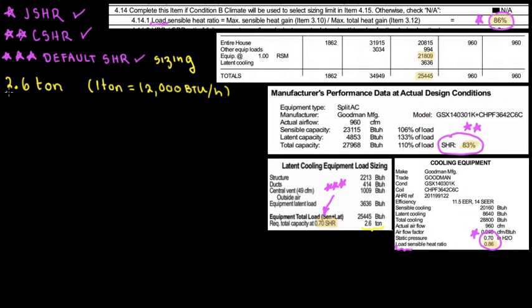This 2.6 ton came about because of the 0.7 sensible heat ratio that we manually put, or if we don't put any sensible heat ratio, the program will put it for us as a default. Sometimes the default sensible heat ratio is 0.7, sometimes 0.73, sometimes 0.75, depending on the load, surface area, and other aspects.